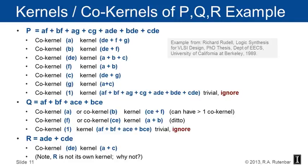The first step is to find the co-kernels and kernels of each function. This slide shows all kernels and co-kernels of the PQR example, pulled from Rick Rudel's PhD thesis from UC Berkeley, 1989. P has six real kernels. For example, co-kernel A gives kernel DE + F + G; co-kernel B gives kernel DE + F; co-kernel DE gives kernel A + B + C.